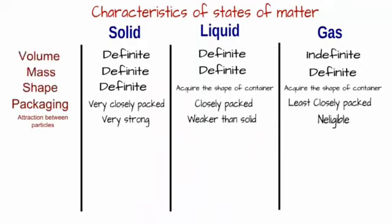First we will talk about volume. Solids have definite volume, liquids also have definite volume, while gases have indefinite volume. The mass of solid is fixed and same applies for liquid and gases. The shape of solid is definite while liquid and gases acquire the shape of the container in which it is kept.